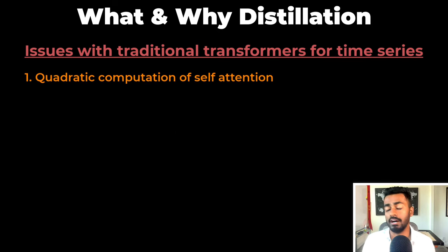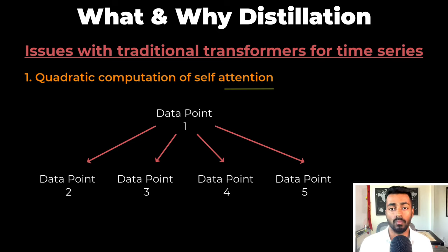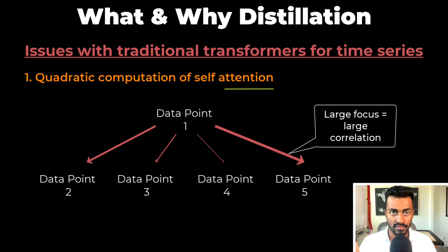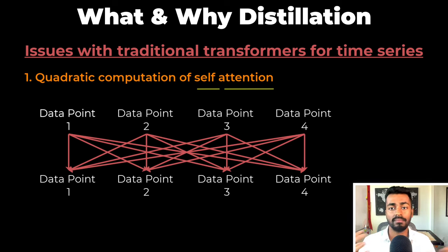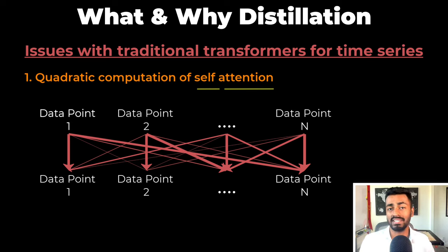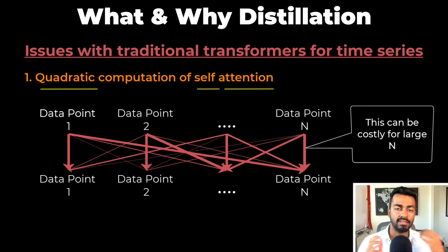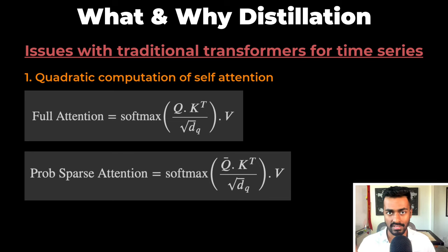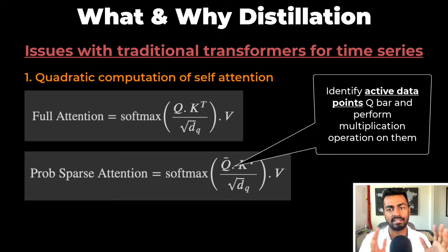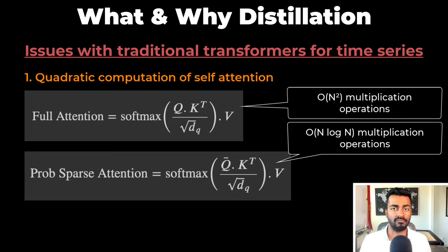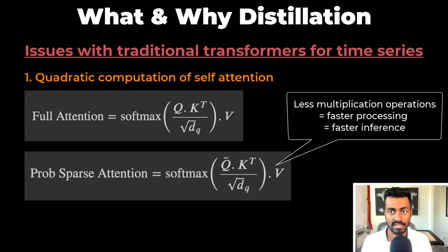So the quadratic computation of self-attention: attention involves how much focus one data point should have on another data point — the larger the focus, the greater their correlation. Self-attention means we compare all the input data points to all the same input data points and identify these correlations. For n input time series data points, the traditional full self-attention requires some order of n-squared multiplication operations, which can be costly for long input sequences. The informer architecture addresses this using prob-sparse self-attention, identifying a subset of active data points and only performing multiplication operations with them, reducing operations from O(n²) to O(n log n). Less multiplication operations means faster processing during the forward pass, which means faster inference.